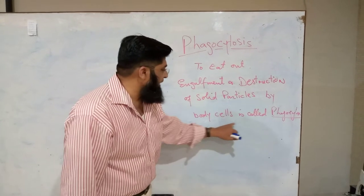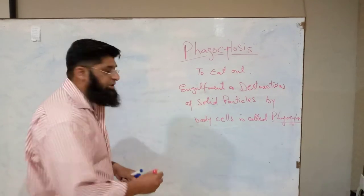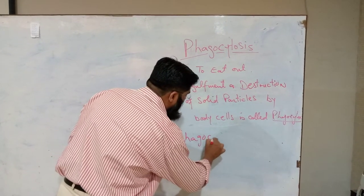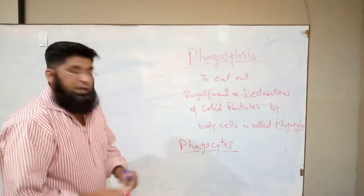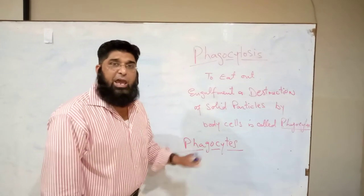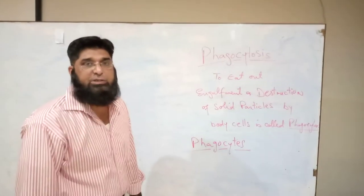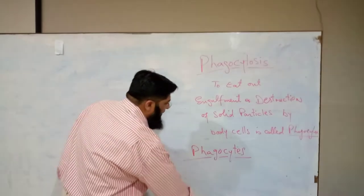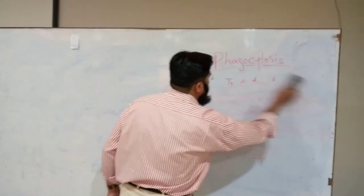By body cells — which body cells? Body cells which are called phagocytes. Cells of our body which carry out the function of phagocytosis are called phagocytes. What are the different types of phagocytes in our body?